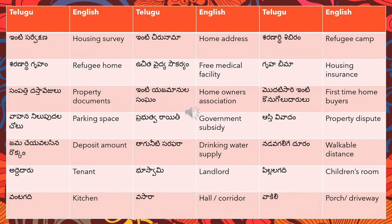'Vahana nilupudala chotu' means parking space — for example, 'vahana nilupudala chotu unda' asks if there is a parking space. 'Prabhutva rahiti' means government subsidy or concession.